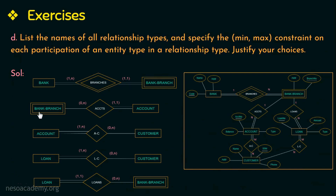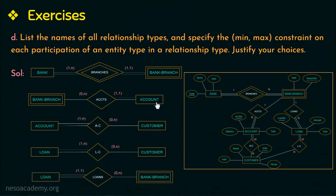For relationship type 'accounts', which relates bank branch and account: a bank branch may or may not have accounts, so partial participation represented as 0, and one branch can have at most n accounts, giving (0,n). All accounts belong to one branch, so total participation represented as 1, and one account can belong to at most one branch, giving (1,1).